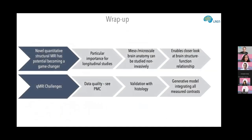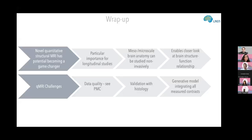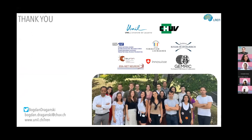To wrap up: quantitative MRI is particularly important for multinational studies. We can see meso- and microscale brain anatomical differences non-invasively, getting structure-function relationships with ideas like g-ratio and conductance velocity. Data quality is important — prospective motion correction is key. We are seeing the first excellent studies validating with histology, including Parkinson's disease and substantia nigra. Thank you very much for your attention.